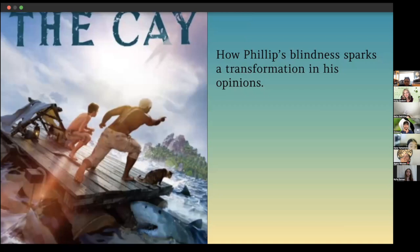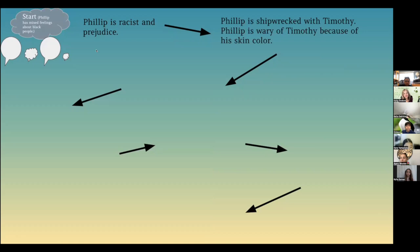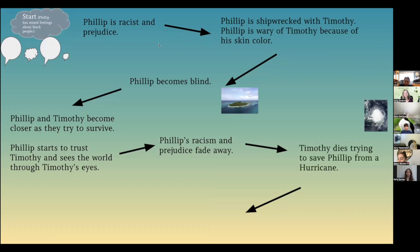How Philip's blindness sparks a transformation in his opinions. So I have the little cloud here because his feelings are mixed up and he's feeling a bit cloudy about racism. He doesn't know what to think. At the beginning he is racist and prejudiced — this is his mom's thoughts versus his own. Eventually what his mom thinks about prejudice and racism rubs off on him, and then his racism and prejudice fade away. Then Timothy dies trying to save Philip from a hurricane, and that greatly impacts his prejudice and racism and makes it go away.